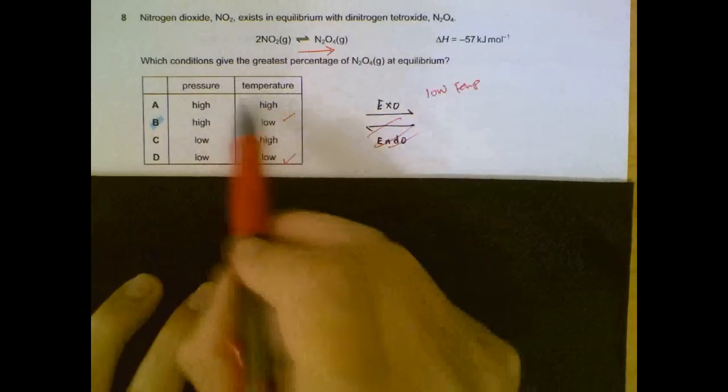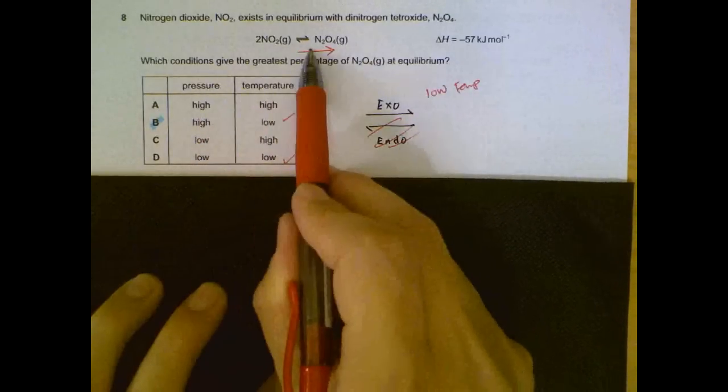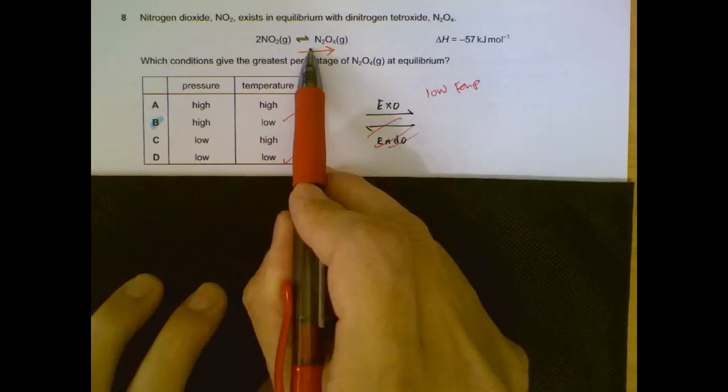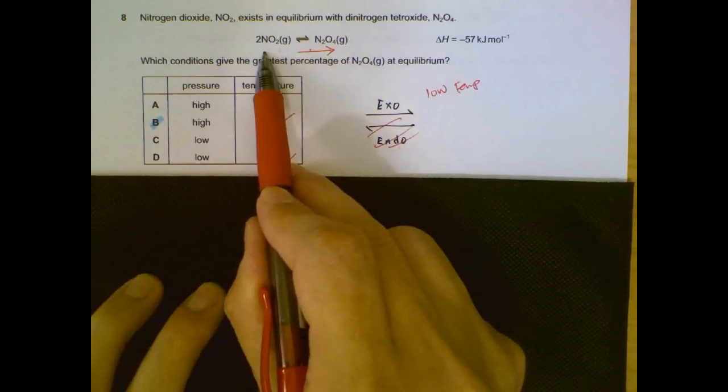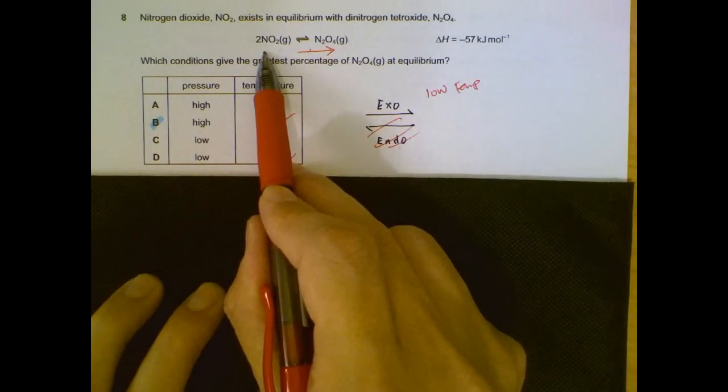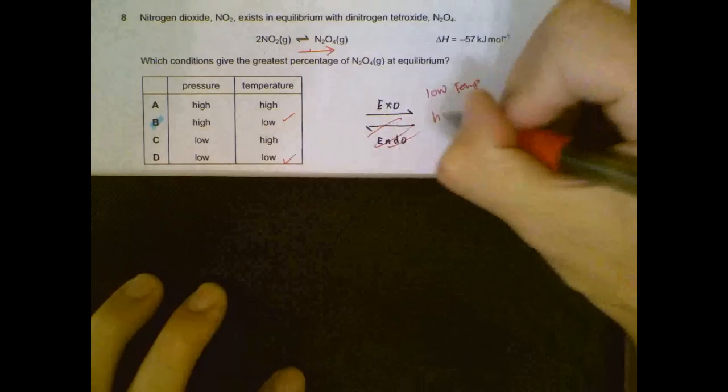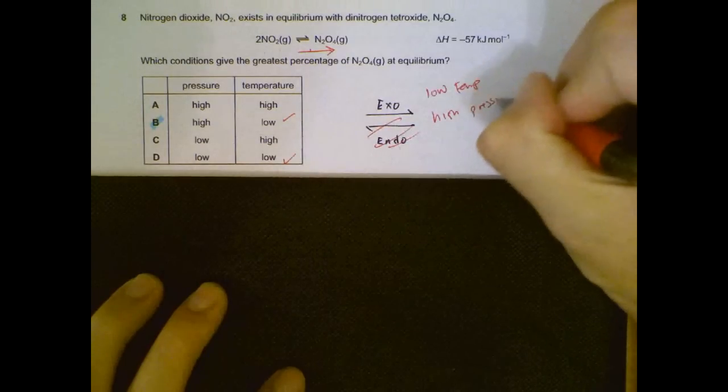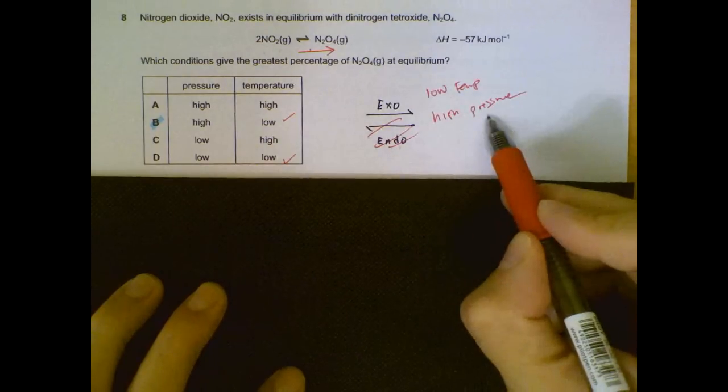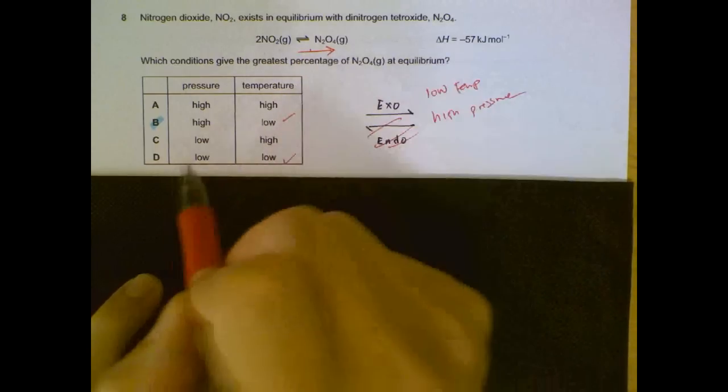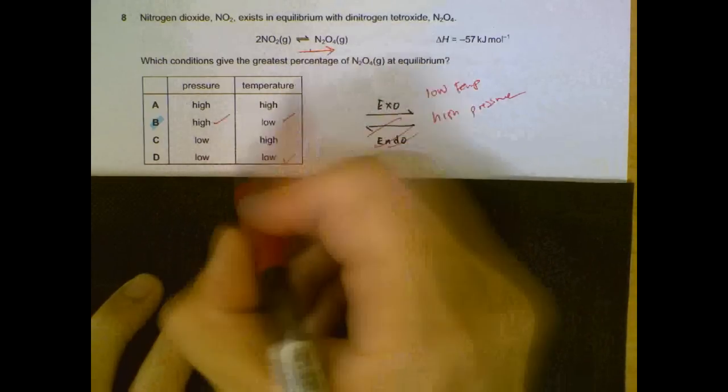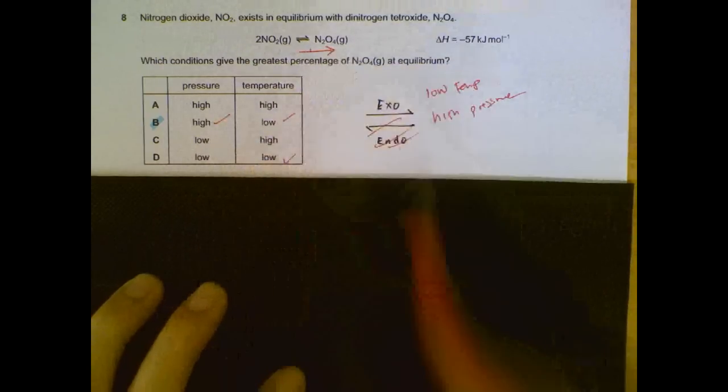And then pressure wise, we have one molecule, one mole of gas on the right, two moles of gas on the left. To ensure that, or to facilitate the shifting to the right, we will need to have high pressure. Because when the system experiences high pressure, it will react to shift the equilibrium to the side where there are less gas molecules. So high pressure will shift the equilibrium to the right side. A low temperature will shift the equilibrium to the right also. So answer is B.